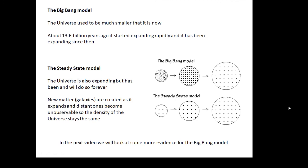What happens is that as it expands, galaxies are created, and basically the space fills up with new galaxies as the universe expands, so that the density of the universe stays the same. That is the Steady State model. If you look at these diagrams here, I think that probably explains it best.